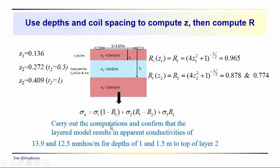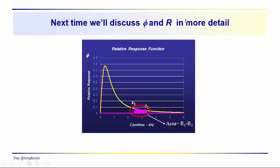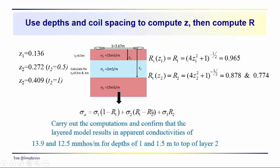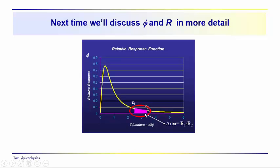Next time we're going to talk about the relative response function phi and the cumulative response function R in a little bit more detail. This graphic here just reminds you, this is the relative response function for the vertical dipole. Remember, unless otherwise noted, we're talking about vertical dipoles. This area, as you might have guessed by now, is R1 minus R2. So this area would be the weighting term for that second layer in this three-layer problem, R1 minus R2. See you next time.